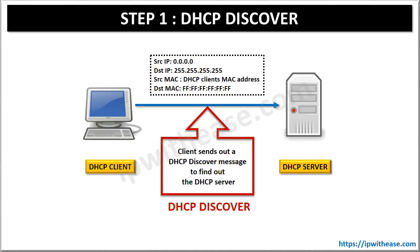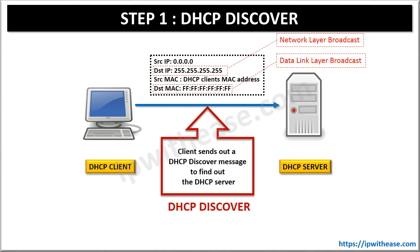Step 1: DHCP Discover. The DHCP client sends out a DHCP Discover message to find out the DHCP server. The DHCP Discover message is a layer 2 broadcast as well as a layer 3 broadcast. In the packet, the source IP is 0.0.0.0 while the destination IP is all 255s. In the frame, the source MAC is the DHCP client's MAC address while the destination MAC is all FF. The above fields clearly show that the DHCP Discover message is a network layer and data link layer broadcast.